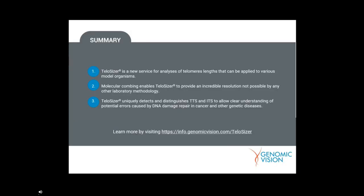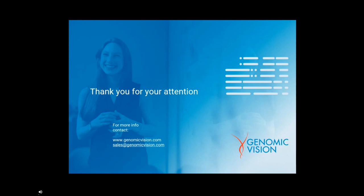With that, I will wrap up today's webinar. The key take-homes are that Telosizer is a new service for the analysis of telomere lengths that can be applied to various model organisms, uses molecular combing, and provides incredible resolution not possible by other lab methodologies. It uniquely detects and distinguishes between true telomere sequences and interstitial telomere sequences to allow a clear understanding of potential errors caused by DNA damage repair in cancer and other genetic diseases. Our application note and flyer are all available on our Telosizer website. You can contact us at sales@genomicvision.com.